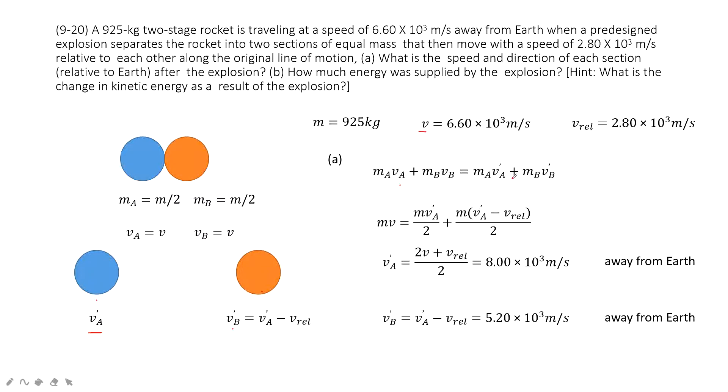Then we can input the known quantities inside. Because it's mass times V. Because Ma is half of mass, Mb is half of mass. Va equals Vb equals V. So MV.